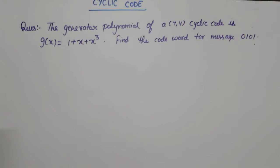Hello everyone. In this video lecture of digital communication and information theory and coding, I am going to discuss one example of non-systematic cyclic code. I have already uploaded a video for non-systematic cyclic code, but in this case g(x) is different — the MSB is just opposite. So we will do this example.